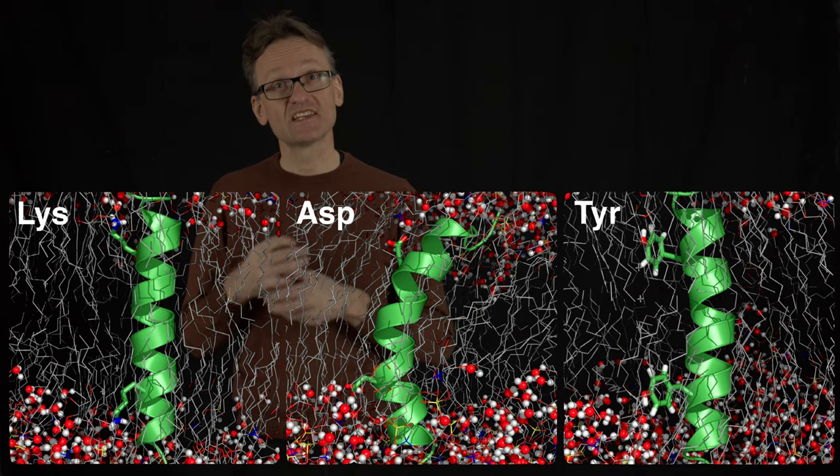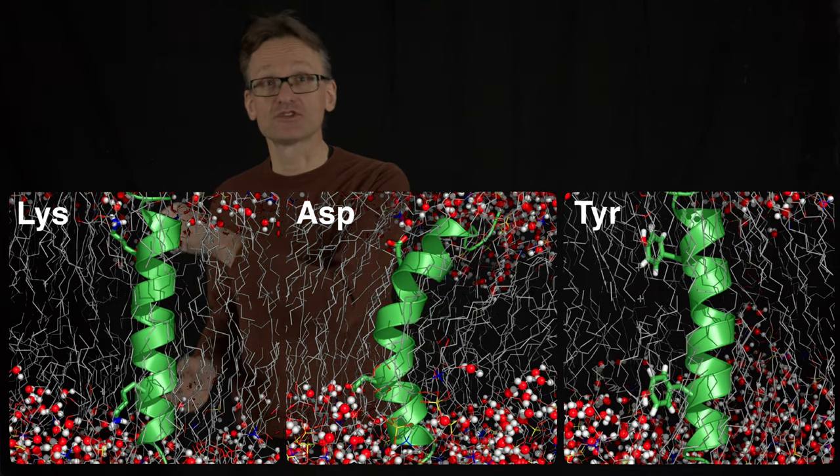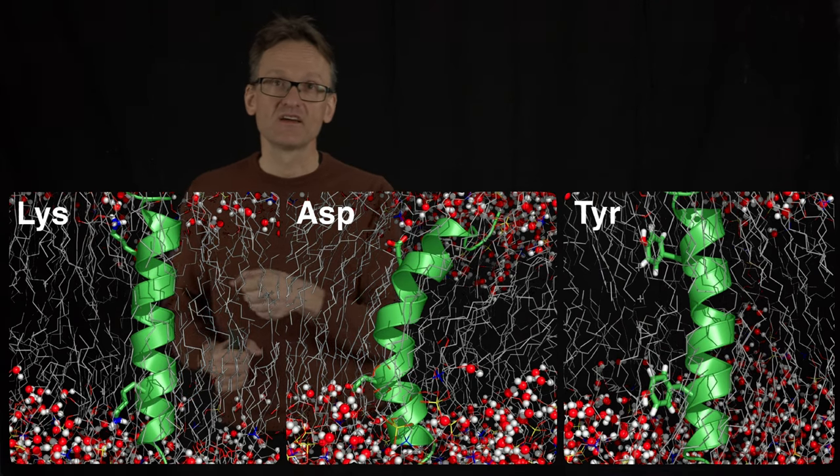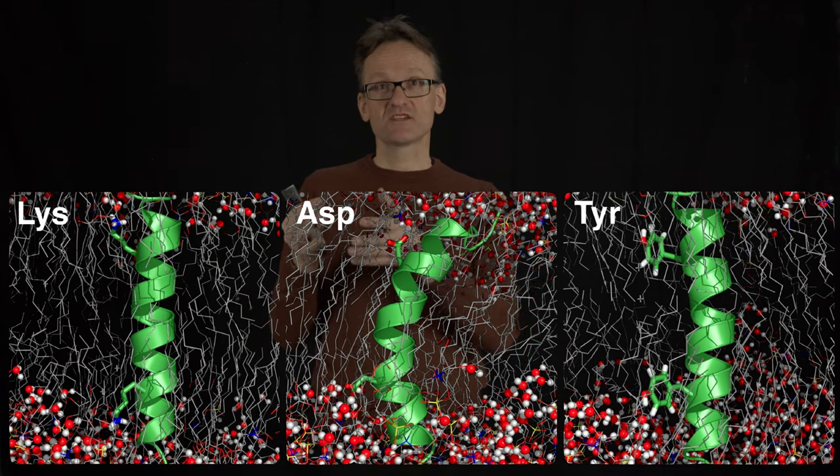But note that oxygen is negative. It can pair up with a positively charged head group, but it cannot pair up with a negatively charged amino acid, such as aspartic acid.